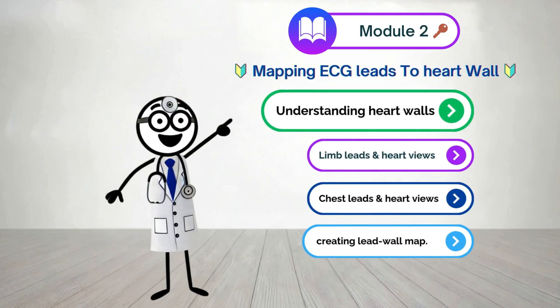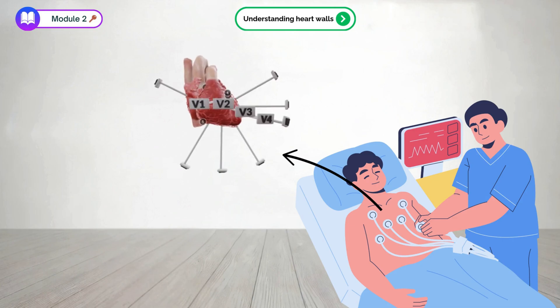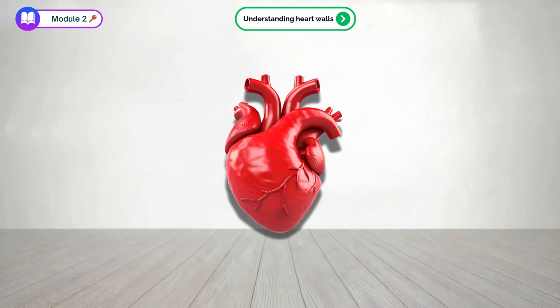First up, understanding heart walls. To understand how ECG leads work, we need to know about the different sections of your heart. Imagine we're looking at your heart from the outside — we can divide it into different walls.